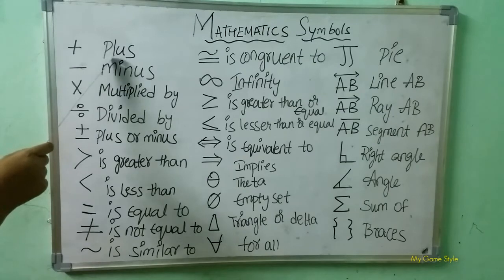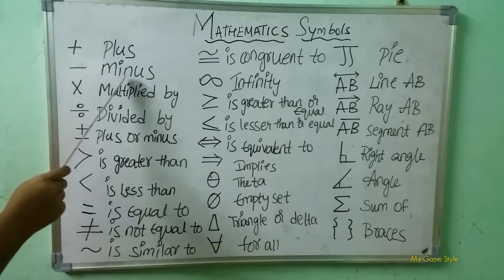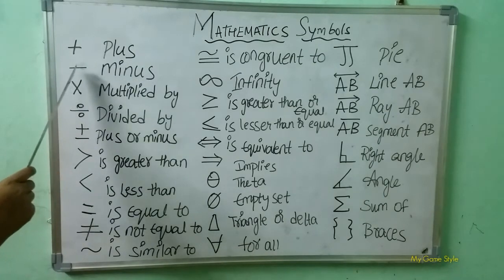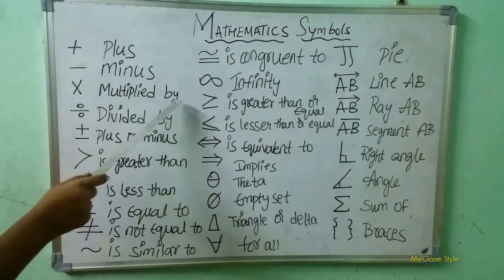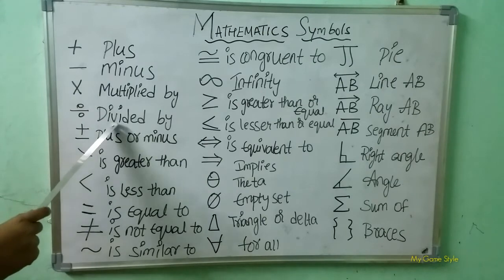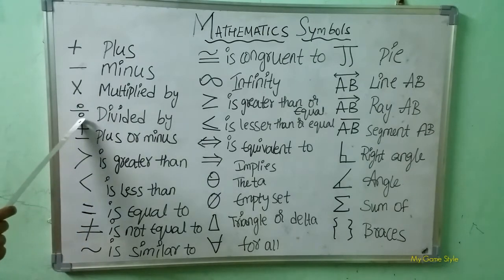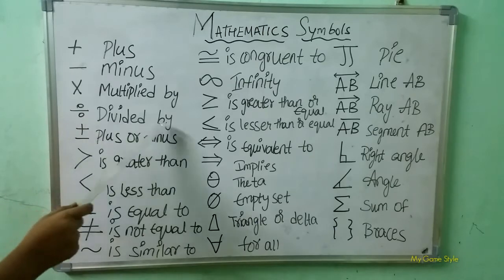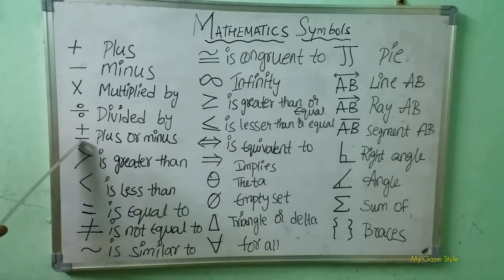This is a plus symbol. This is a minus symbol. This is a multiplied by symbol. Next, divided by symbol — this is a divided by symbol. This is a plus or minus symbol.